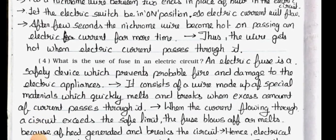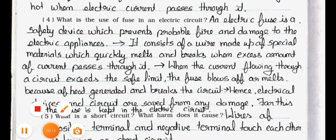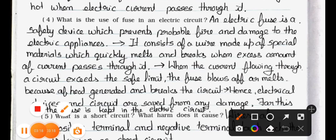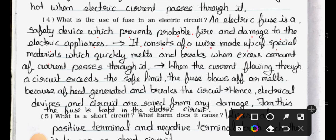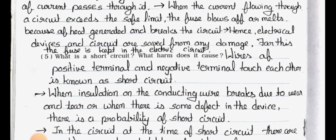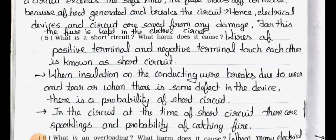Question number four: What is the use of a fuse in an electric circuit? Answer: An electric fuse is a safety device which prevents probable fire and damage to electric appliances. It consists of a wire made of a special material which quickly melts and breaks when an excess amount of current passes through it. When the current flowing through a circuit exceeds a safe limit, the fuse blows off or melts due to heat generated and breaks the circuit, hence saving the electrical devices and circuit from damage.